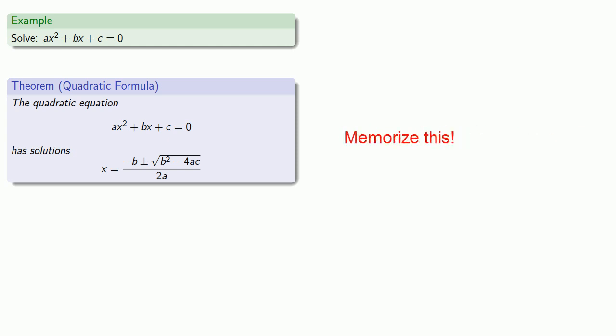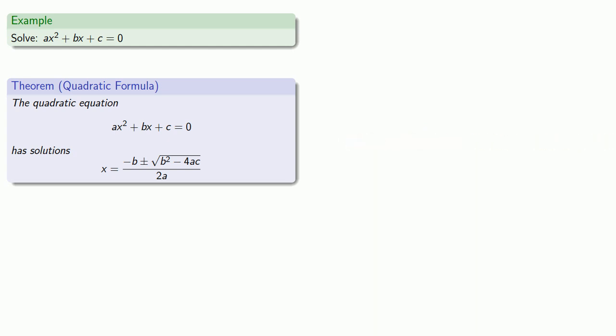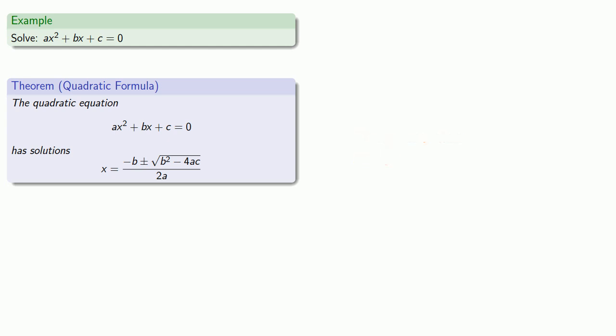This is one of very few formulas actually worth memorizing. Remember this — put it on a t-shirt, tattoo it onto your forehead. Well, don't tattoo it onto your forehead. But it is something you should keep close to mind.